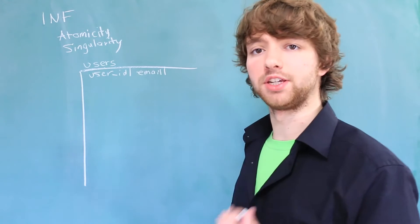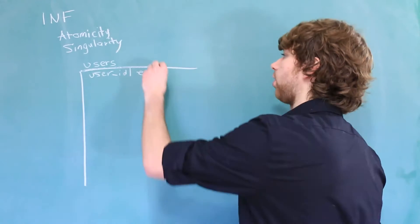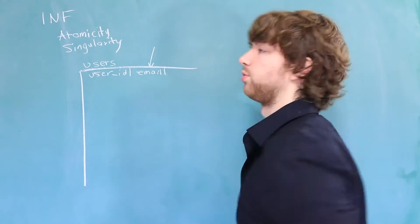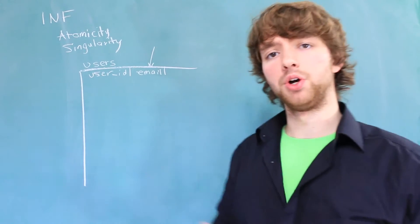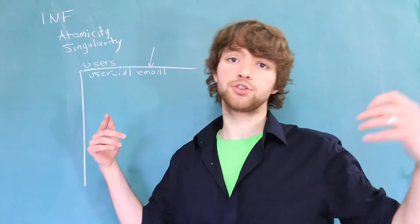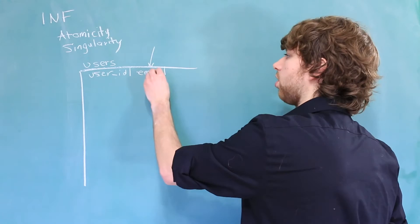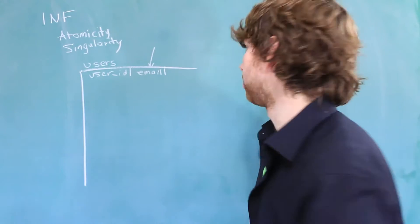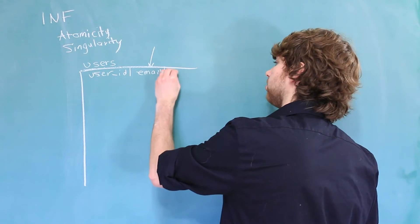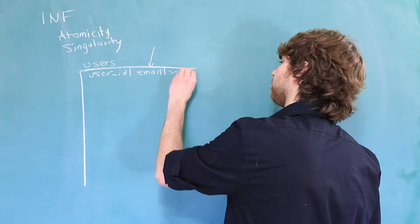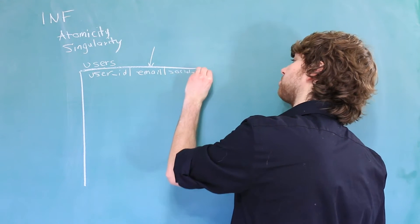Now this is where the first example of singularity comes in. Each column describes only one thing, an email. We don't have email and social networks. We split that out. In addition to that, we want our column headers to be singular. So we could have in here, I'm going to break the rules and say social networks with an S.